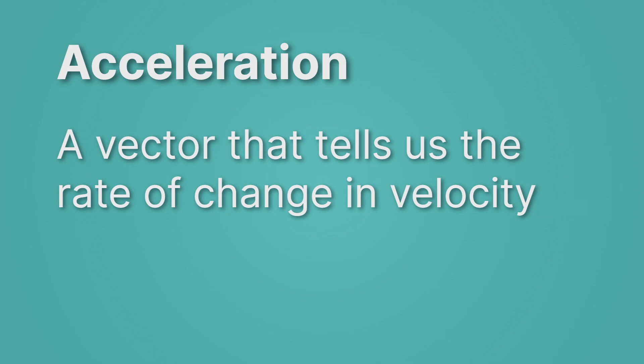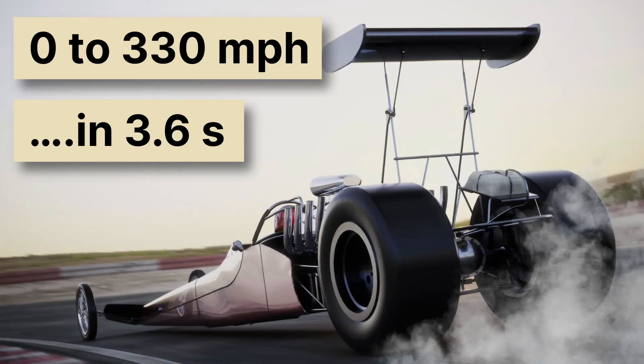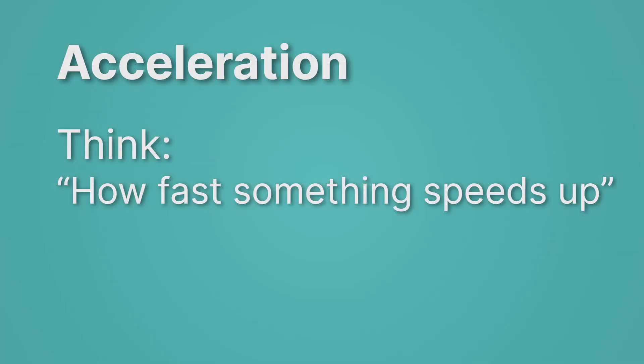And it tells us the rate of change in velocity. Let's think about something that accelerates really fast. This is called a top fuel dragster, and it goes from zero to 330 miles per hour in 3.6 seconds. That's some fast acceleration. To understand acceleration a little better, we should think about it as how fast something speeds up. We just need to tack a direction onto that.